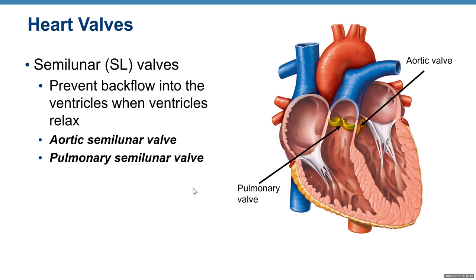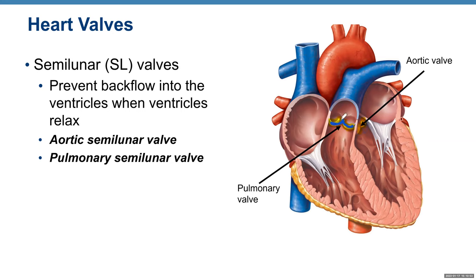We also have two semilunar valves, located between the ventricles and blood vessels, that prevent backflow into the ventricles when ventricles relax. When the ventricle contracts, it pushes blood into the pulmonary trunk and aorta. The aortic semilunar valve sits between the left ventricle and aorta, and the pulmonary semilunar valve sits between the right ventricle and pulmonary trunk.